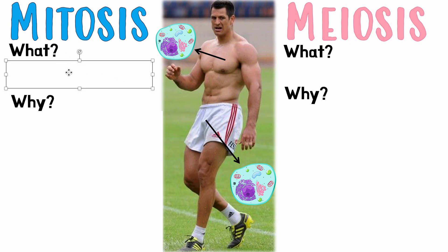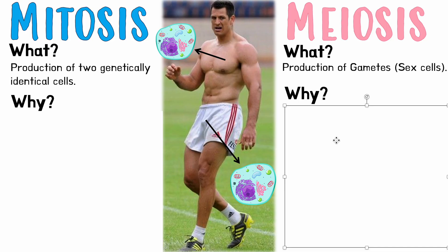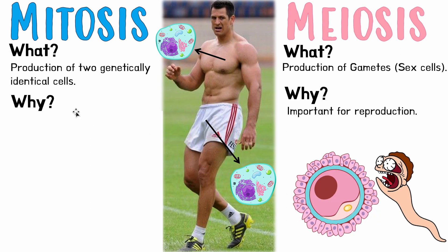So what is mitosis? It is the production of two genetically identical cells — making a clone of a cell. What about meiosis? Completely different: the production of sex cells, like sperm and egg. The purpose of meiosis is to make sperm and egg, which is very important for sexual reproduction — to be able to make kids and pass on your genetic information.